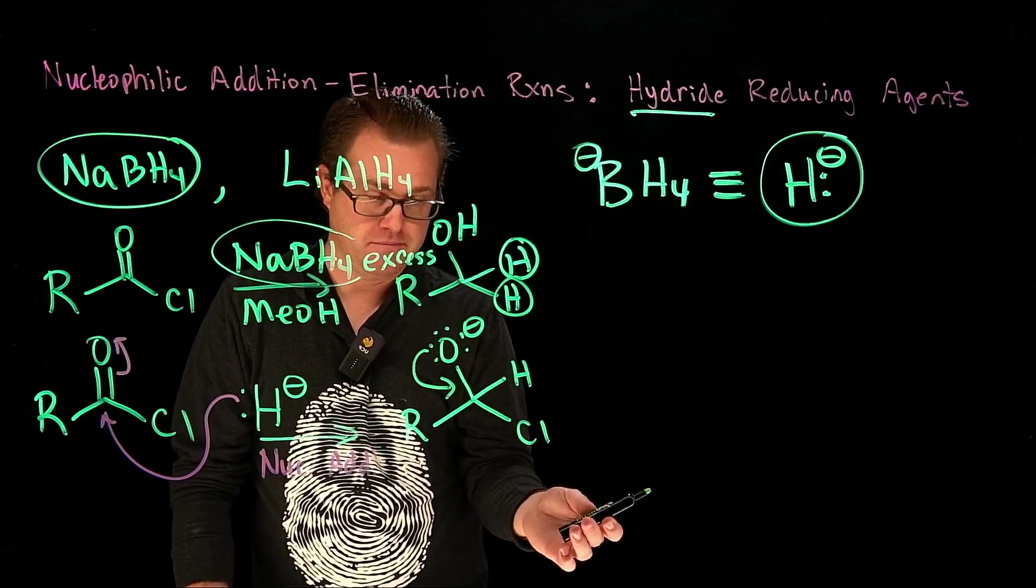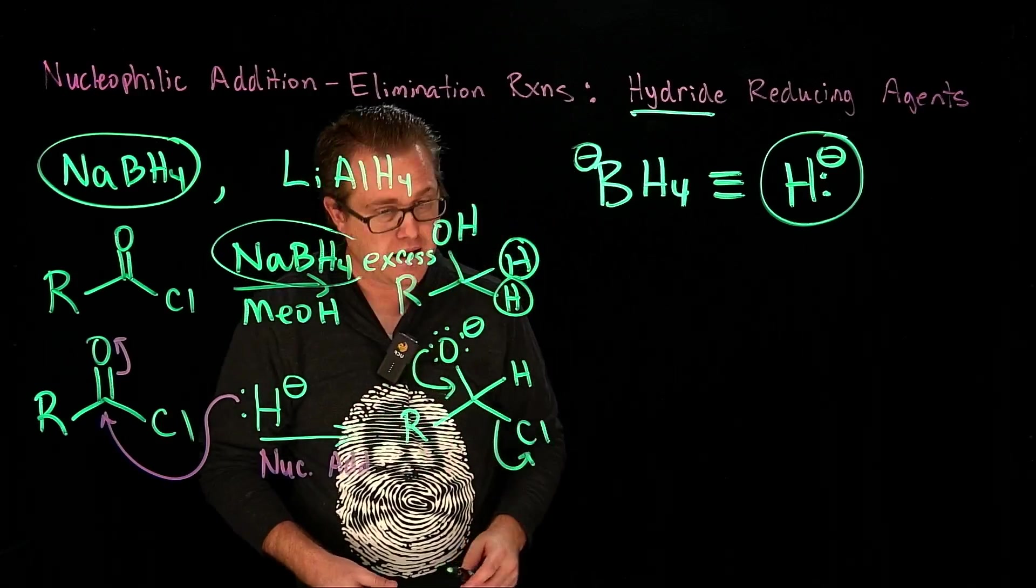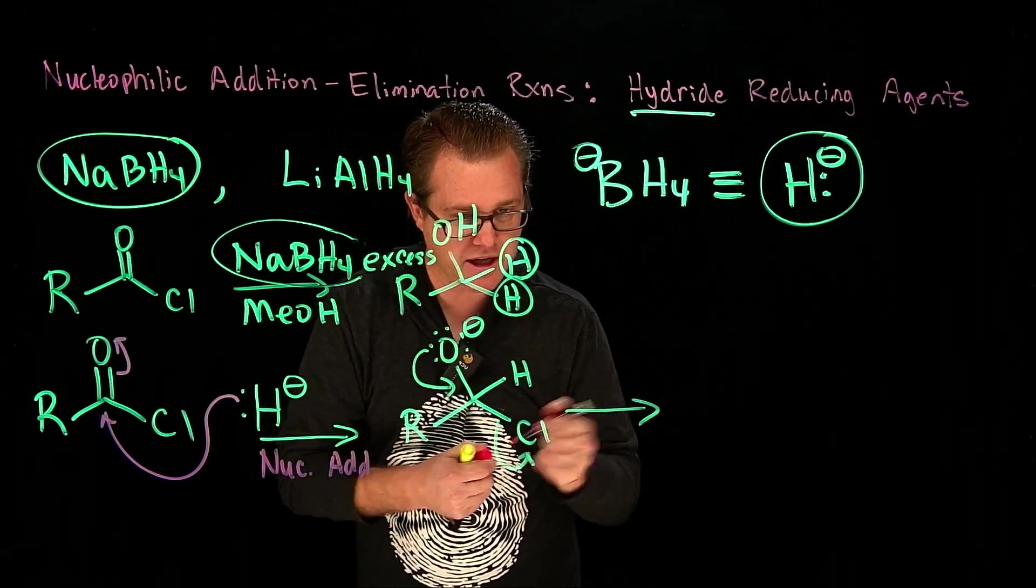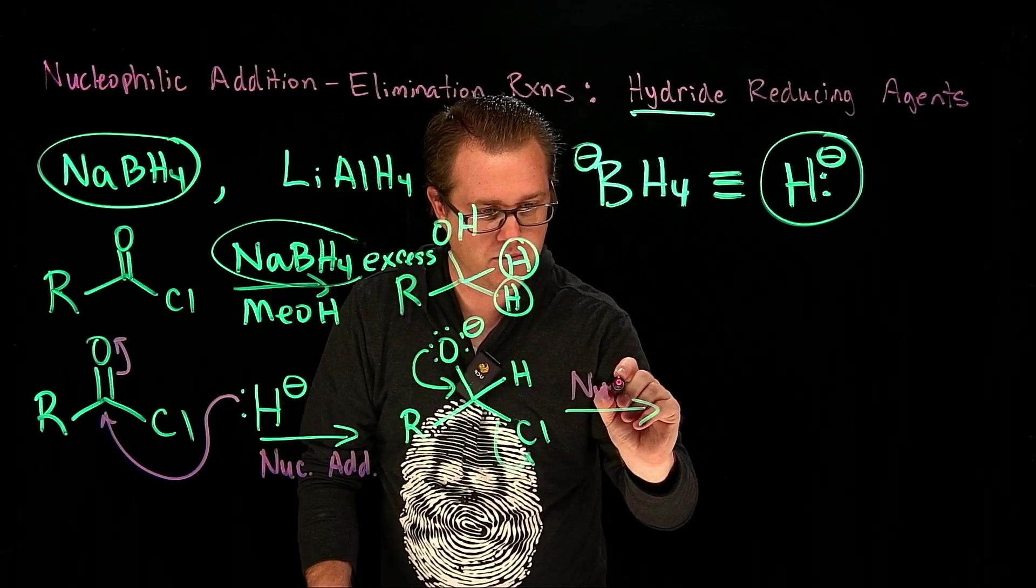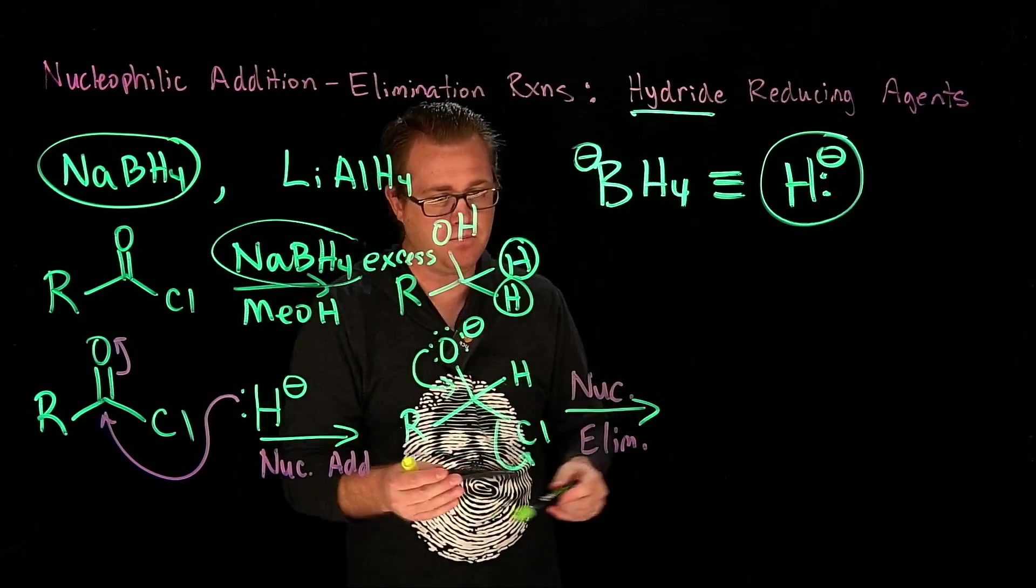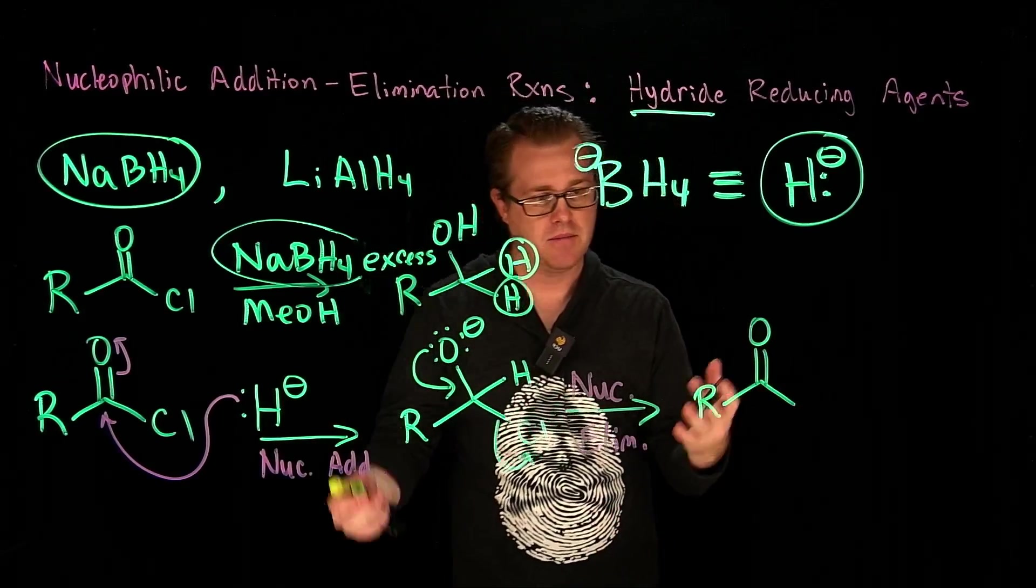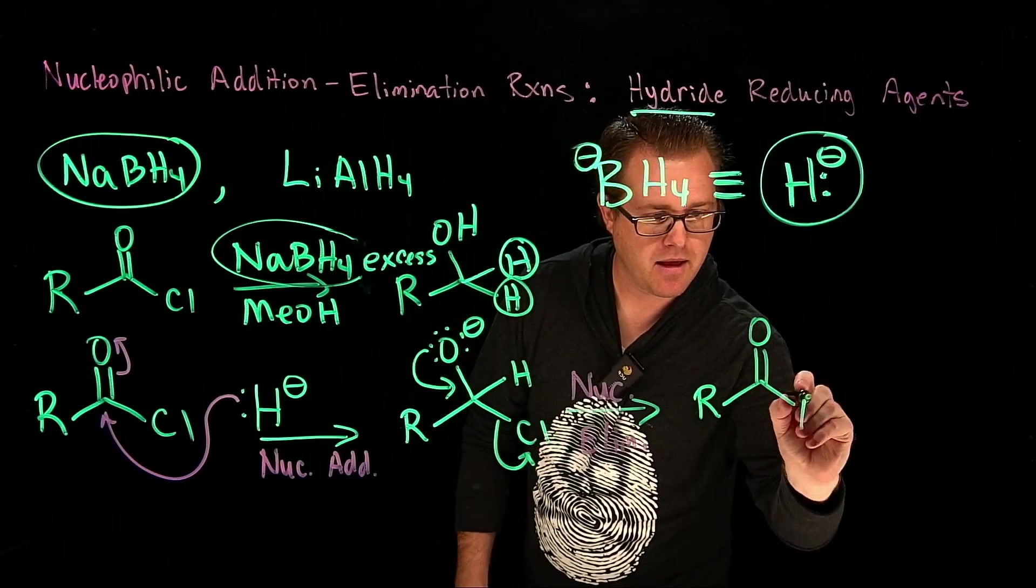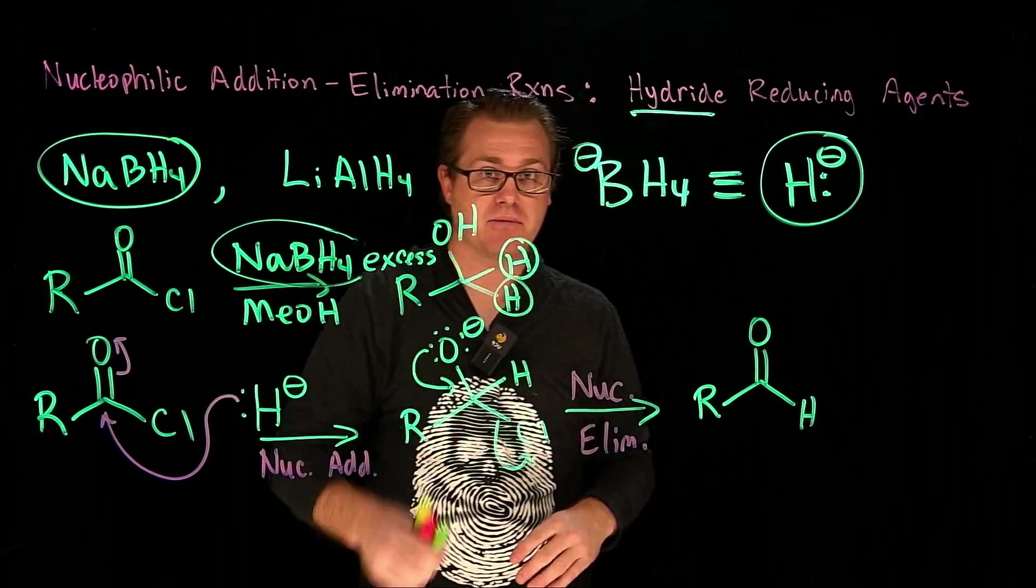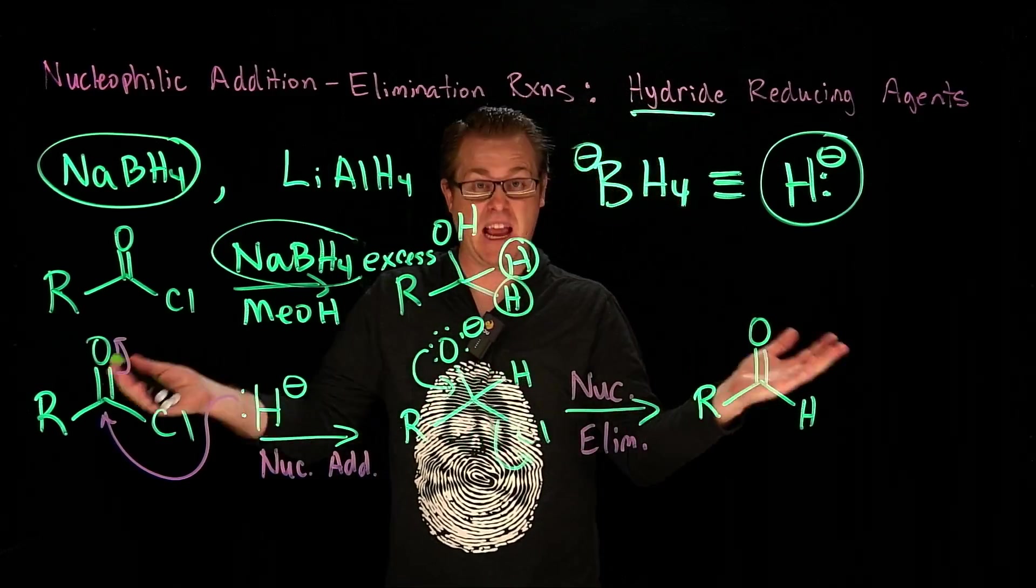But the chloride is a good leaving group, so it's the chloride that's going to leave right there. So now we have another step where we have the nucleophile elimination. There's our nucleophile elimination. And what kind of product did we get right there? That is an aldehyde. But we have excess reducing agent present, and that aldehyde is not just going to stay there. It's going to be reduced again.